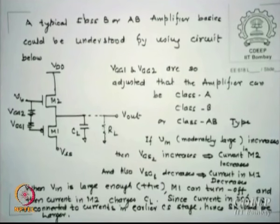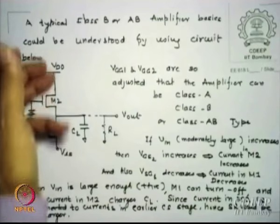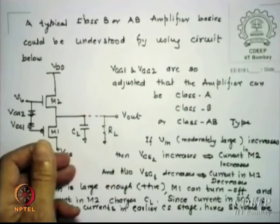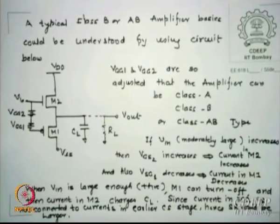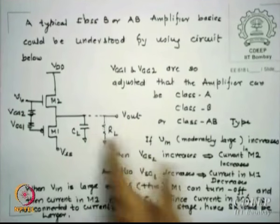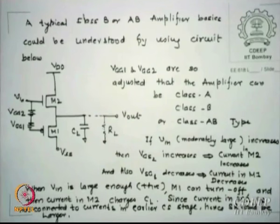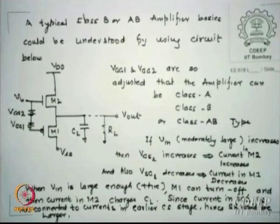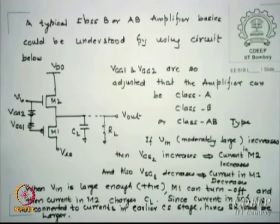The major distortion seen is third harmonic distortion due to nonlinearity: A0 + A1X + A1X² + A2X³. Expanding this series, the terms at ω1 ± 3 are the ones that hurt the most.